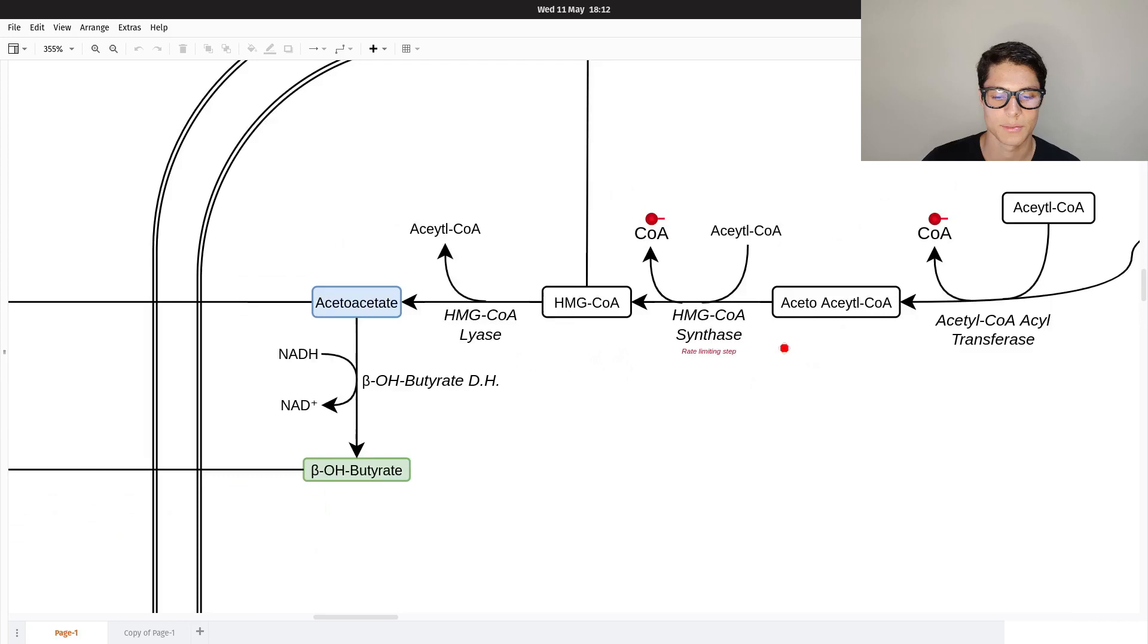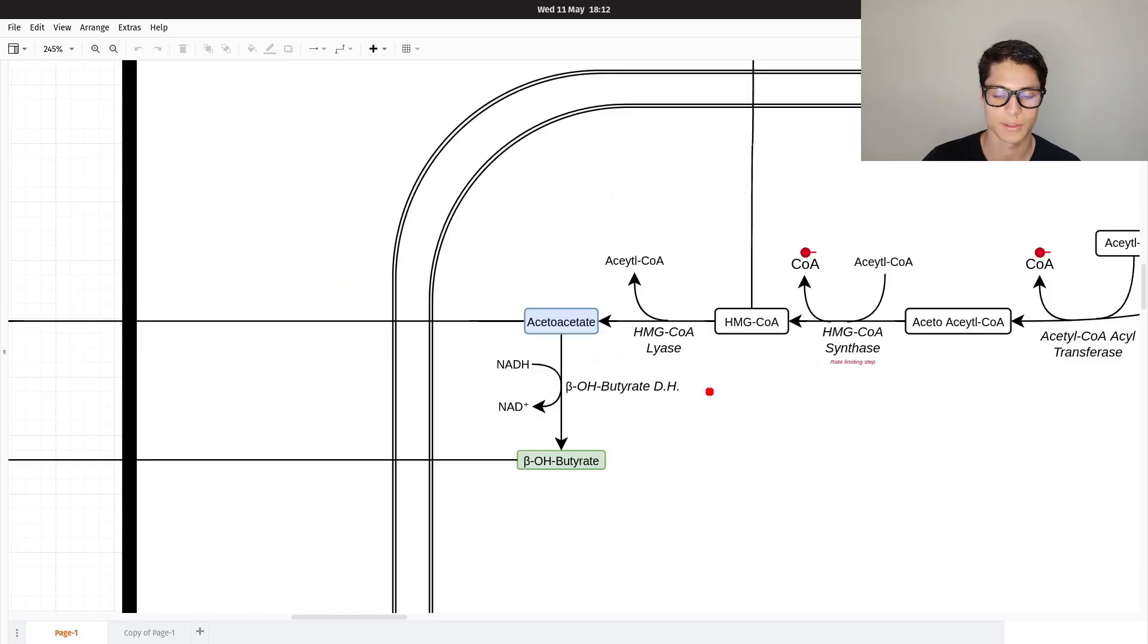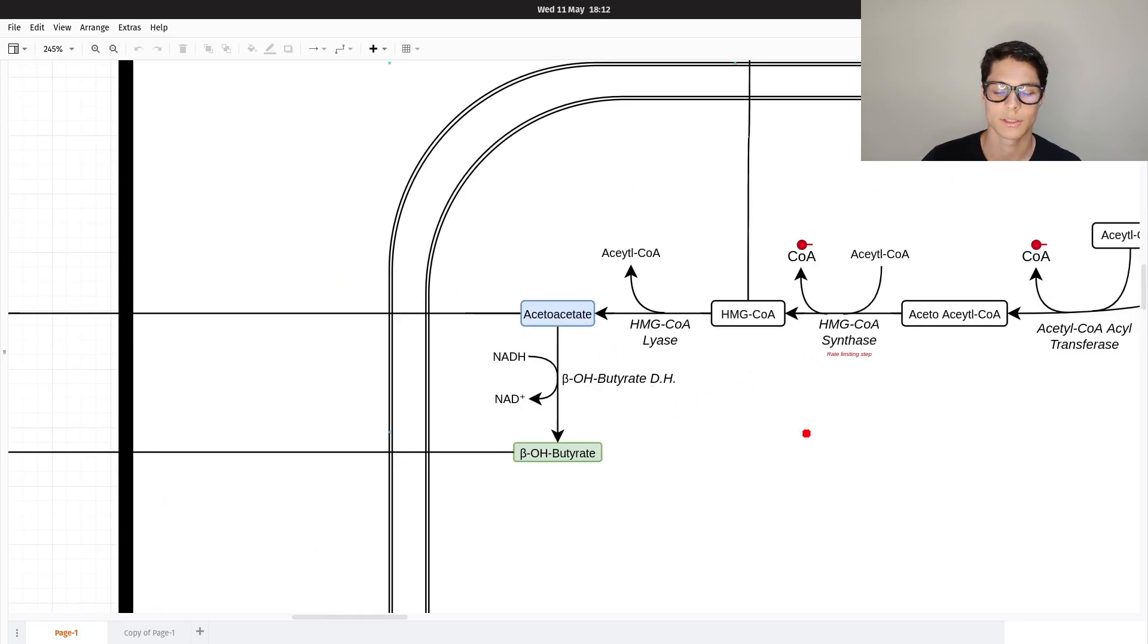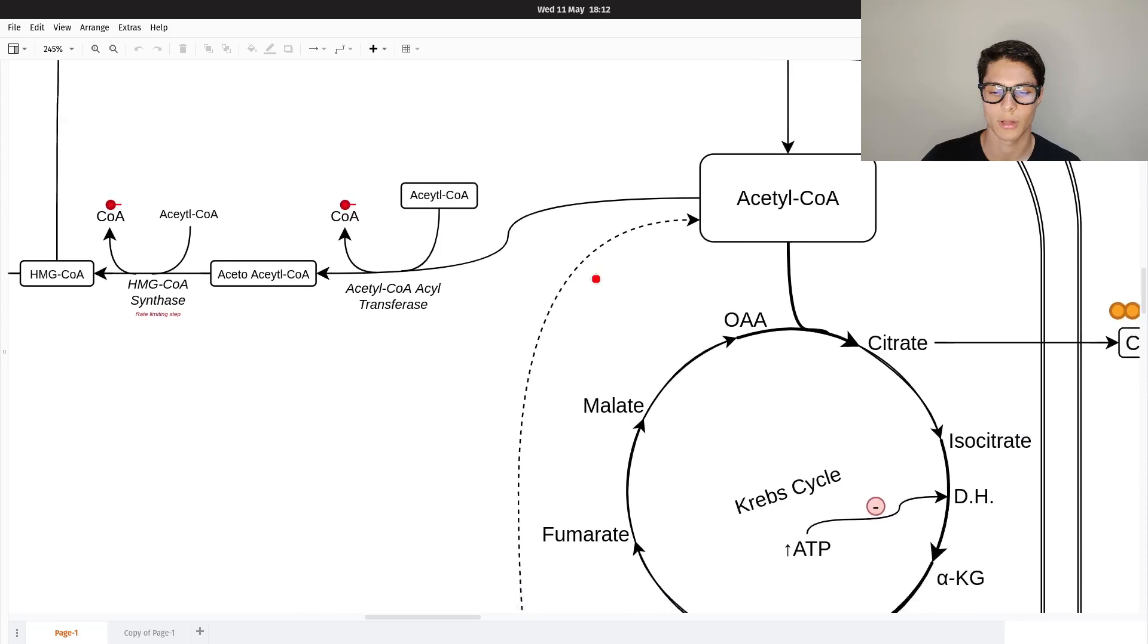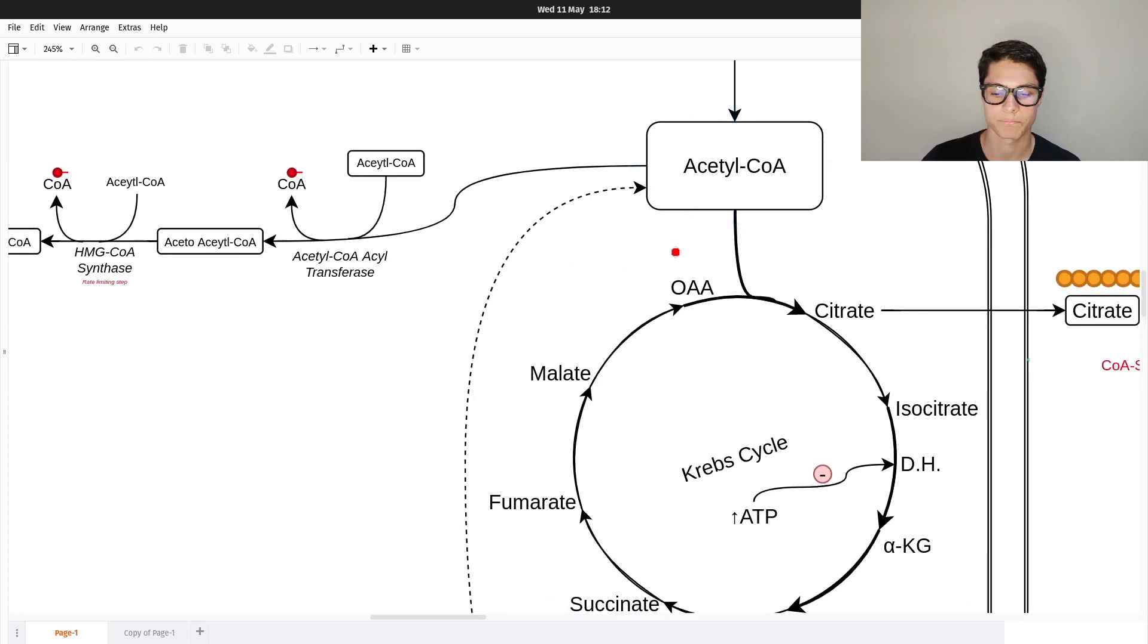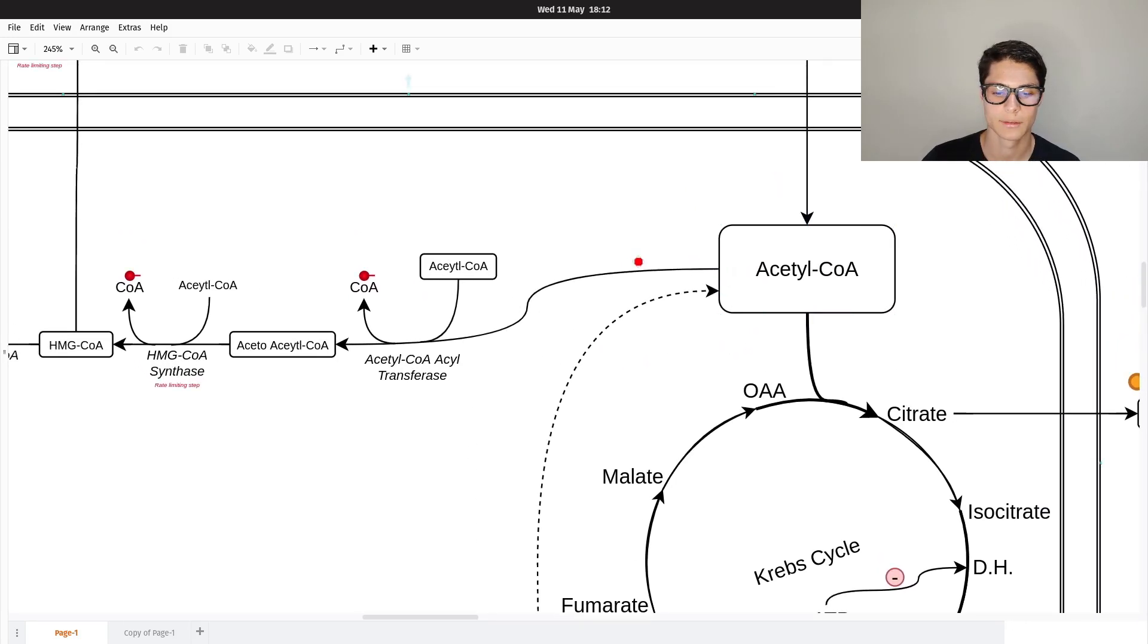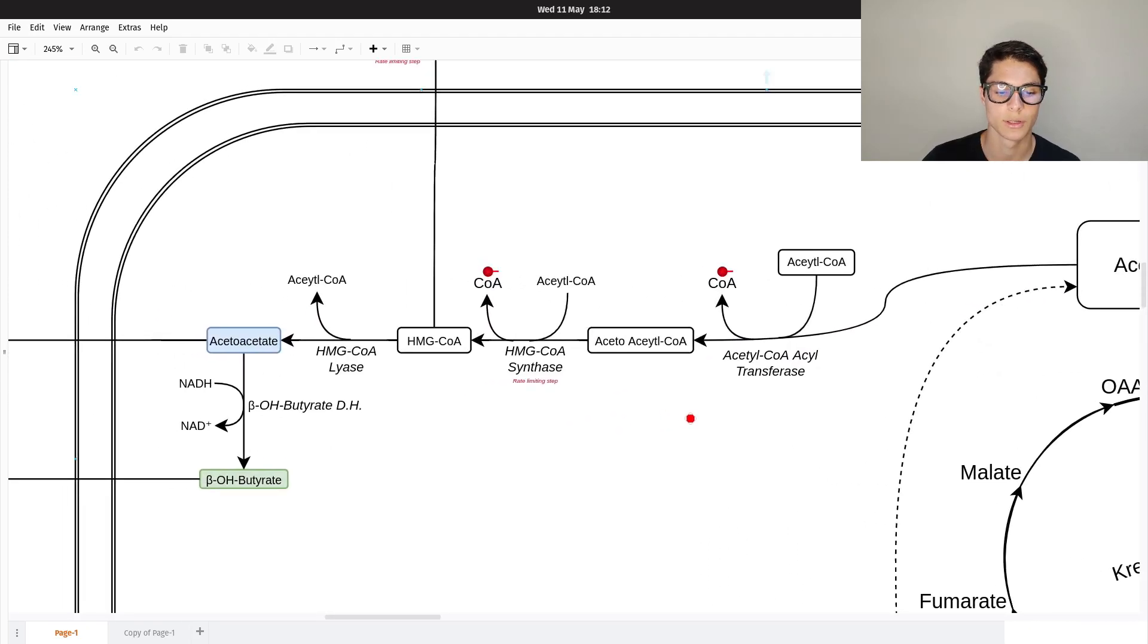That's it. This is the metabolism of ketones. This occurs when glucose levels are very low, like in a fasting state or in a ketogenic diet. We accumulate a lot of acetyl-CoA.